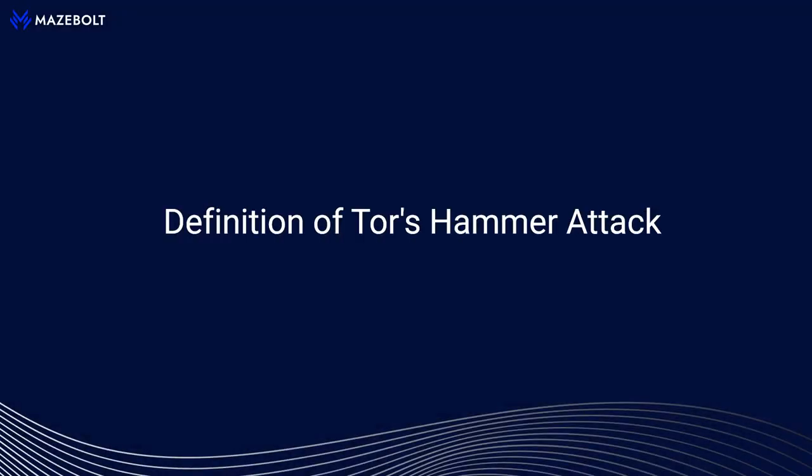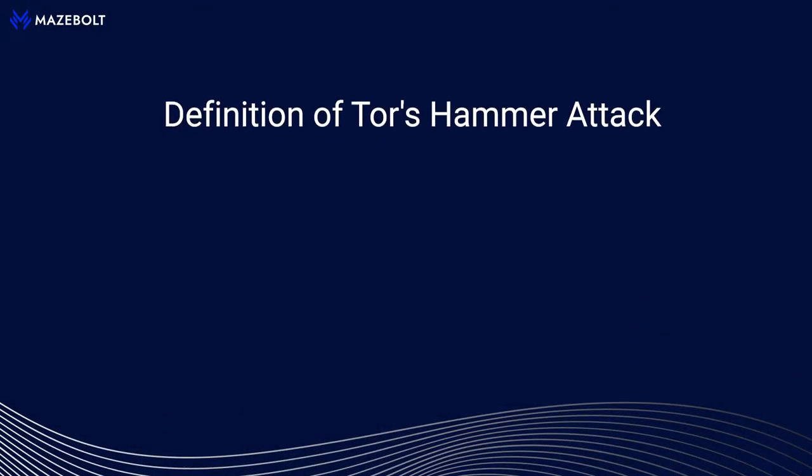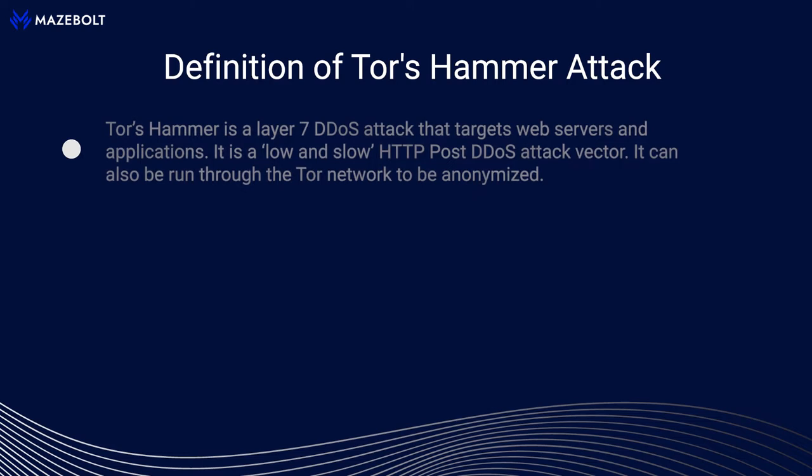Definition of Tor's Hammer Attack. Tor's Hammer is a Layer 7 DDoS attack that targets web servers and applications. It is a low and slow HTTP POST DDoS attack vector. It can also be run through the TOR network to be anonymized.